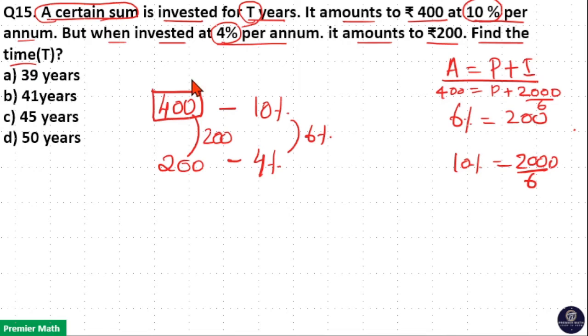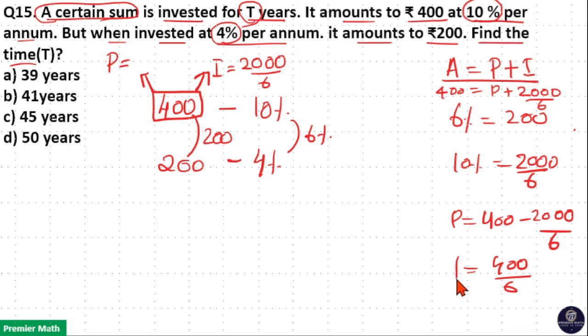That means here interest at 10% rate is 2000 by 6, and principal is equal to 400 minus 2000 by 6, which is equal to 6 into 400, 2400 minus 2000 is 400 divided by 6. So principal is equal to 400 by 6 here.